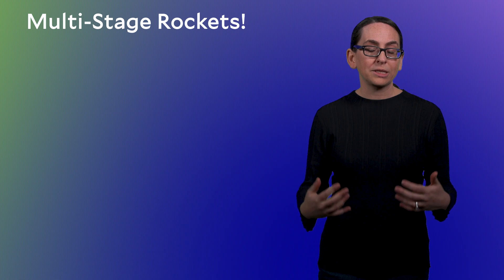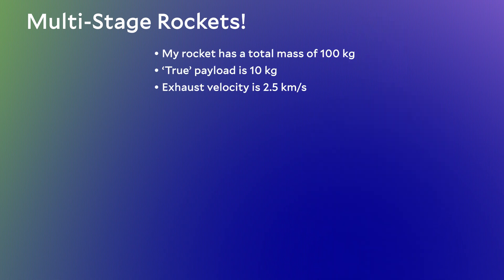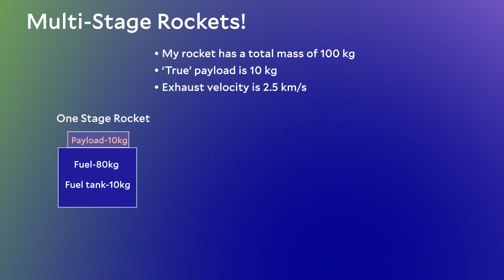Let me walk you through an example of rocket staging. I've made up some numbers to make it easier to see what's going on. We'll have an optional material at the end of this module with real-life numbers. For the moment, just stay with me for a little bit of math and I think you'll be able to see the power of rocket staging. Suppose I have a rocket with a total mass of 100 kilograms. The true payload will be 10% of the total, or 10 kilograms — that's the stuff I actually want to get into orbit. We'll set the exhaust velocity at a constant 2.5 kilometers per second. First, we'll consider a single stage to orbit example.